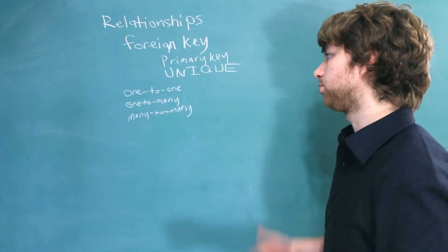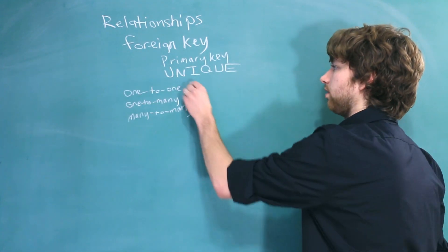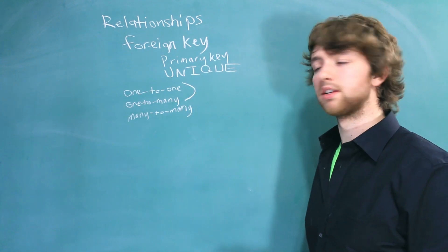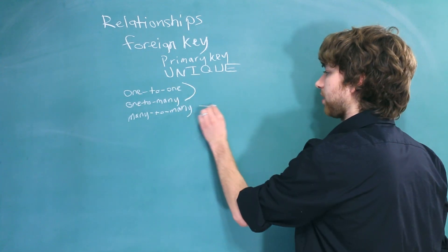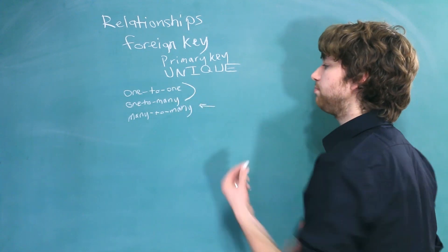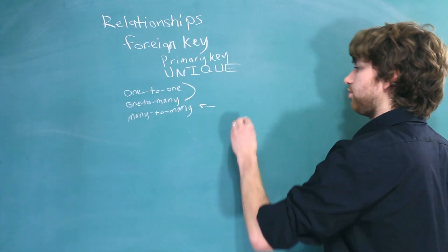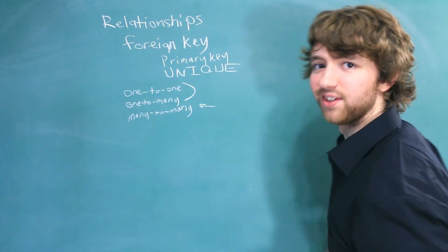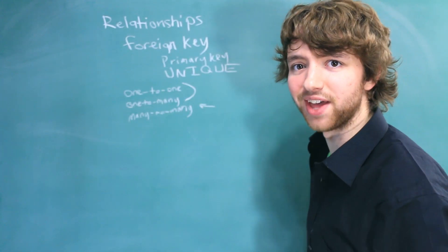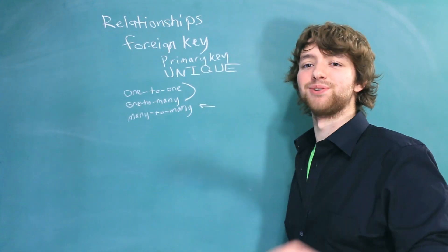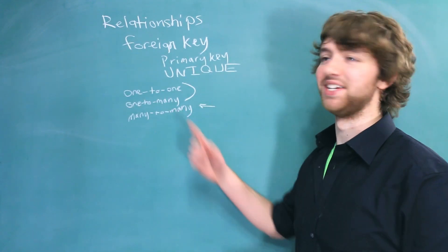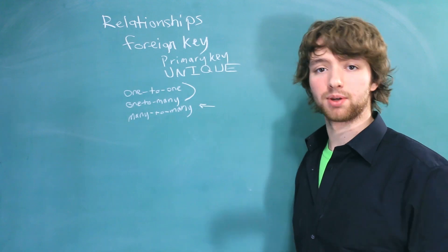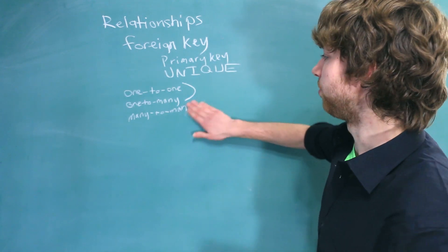Now there are actually three types of relationships. We can only store two of them directly in a database. The third one we actually have to manipulate — you'll have to wait until we start talking about many-to-many relationships in the upcoming video.